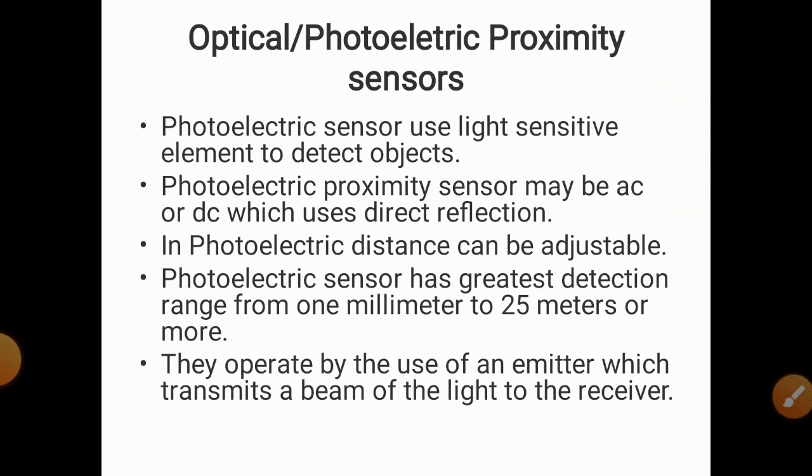We will now study the next type — the optical or photoelectric proximity sensor. The name suggests that we use a light-sensitive element to detect objects, using a light beam. The photoelectric proximity sensor may be AC or DC and uses direct reflection. The distance can be adjustable, and this type has the greatest detection range — from 1 mm to 25 meters or more.